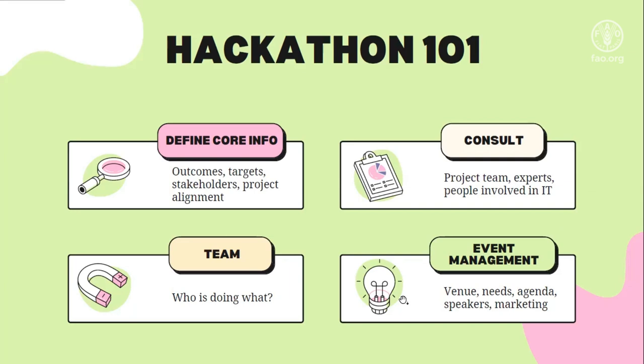The next step is event management. Here we determine the venue and the needs of the participants — for example, if there are participants with special needs, we should always take that into account. We draft the agenda, invite speakers, and one crucial point is not to forget about marketing so that people know the event is happening.